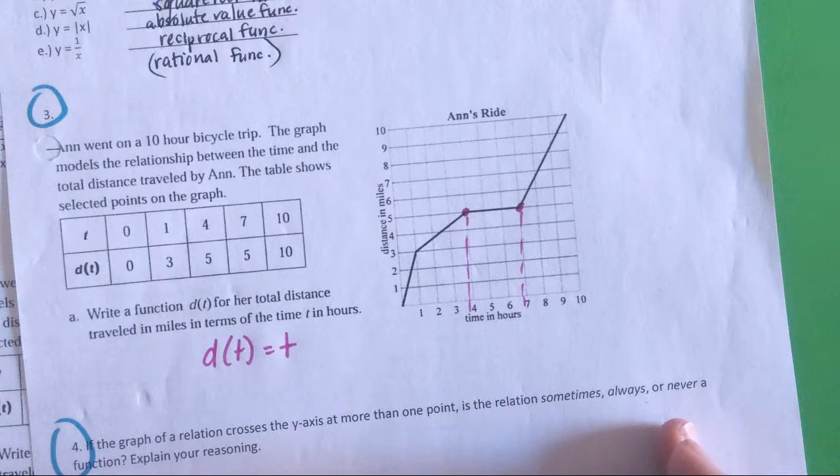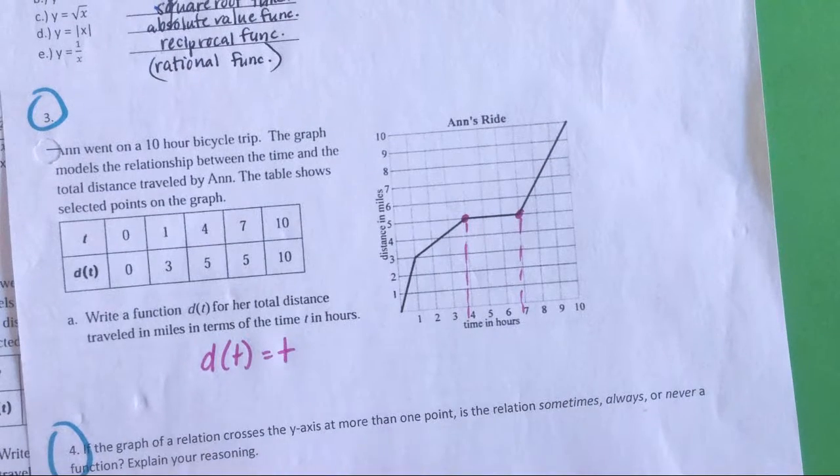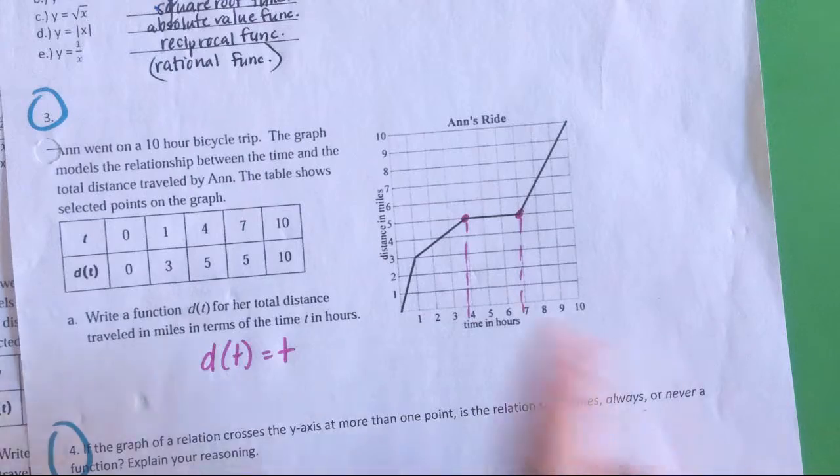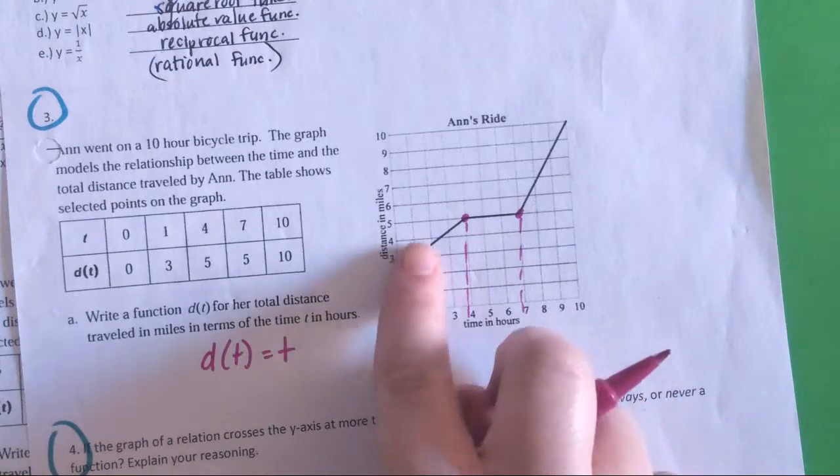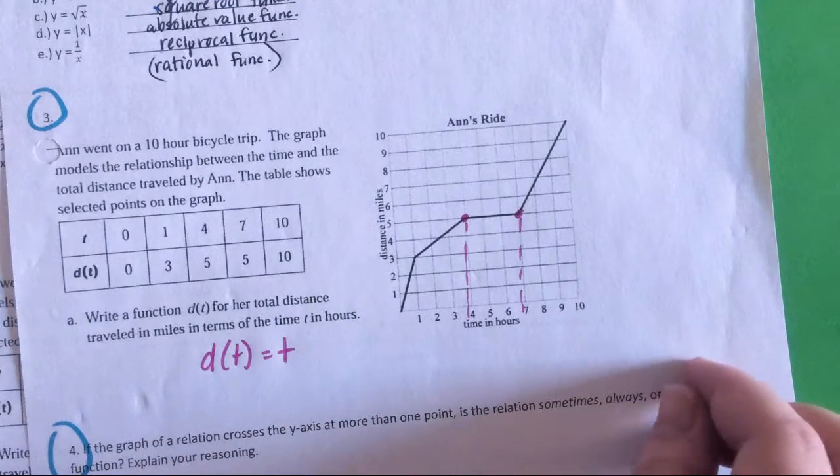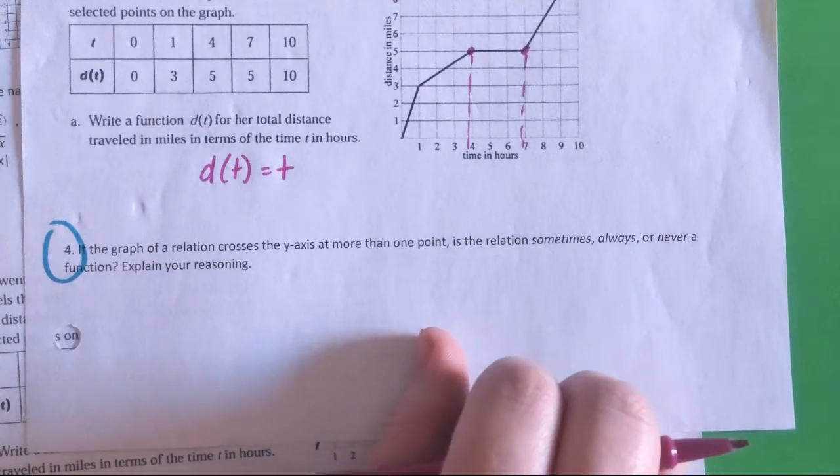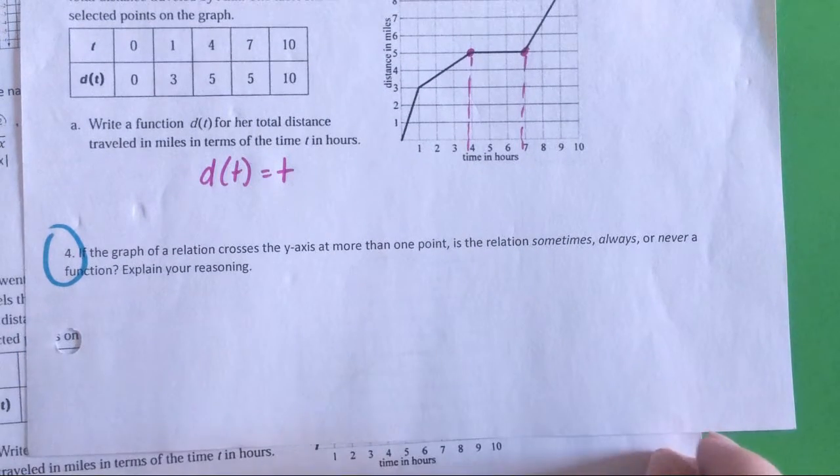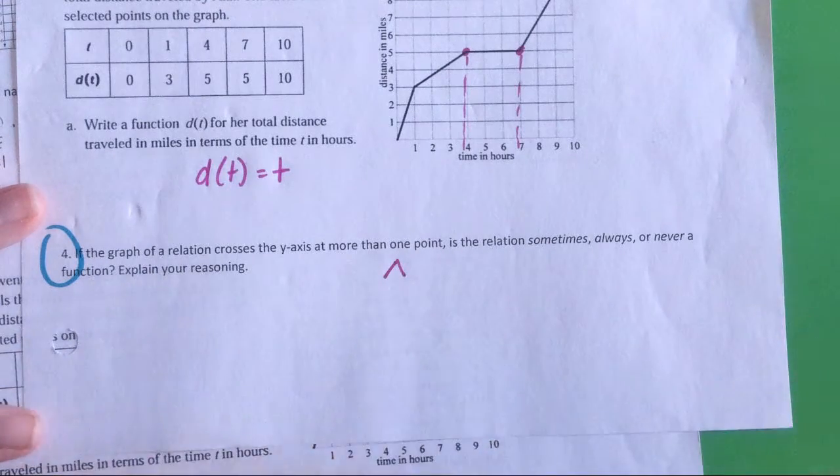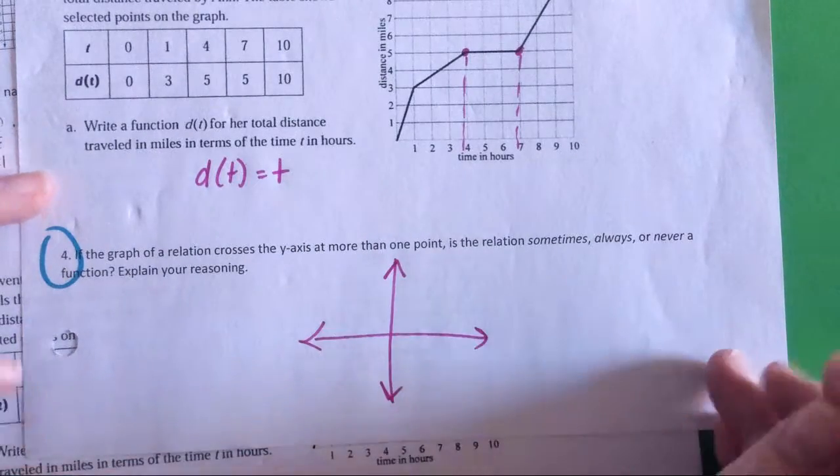I'm sure if I was taking a 10-hour bike ride, I would take a 3-hour break as well, if not a 10-hour break. She was going really fast at first, almost hit halfway there, and then she stopped. So then for the next one, we're going to let go of Ann's bike ride because we can analyze that all day long. The next question says, if the graph of a relation crosses the y-axis at more than one point, is the relation sometimes, always, or never a function? Explain your reasoning. I would love to hear someone's thoughts on this.